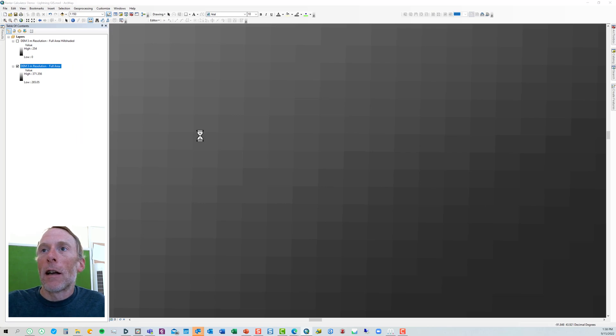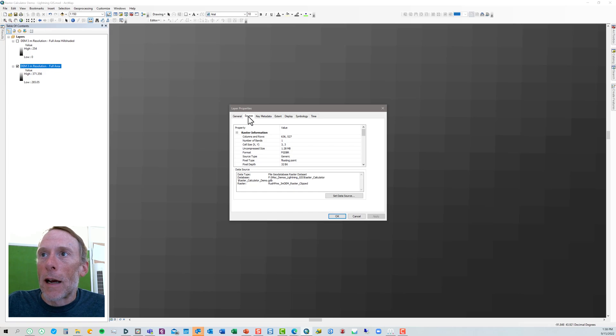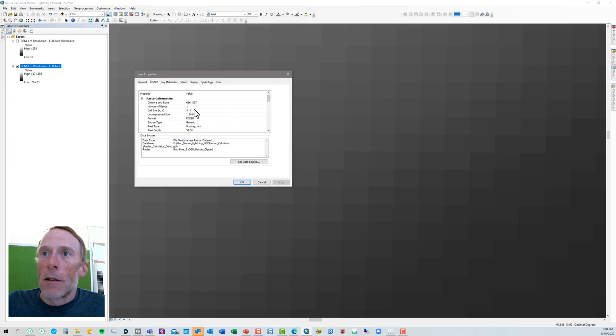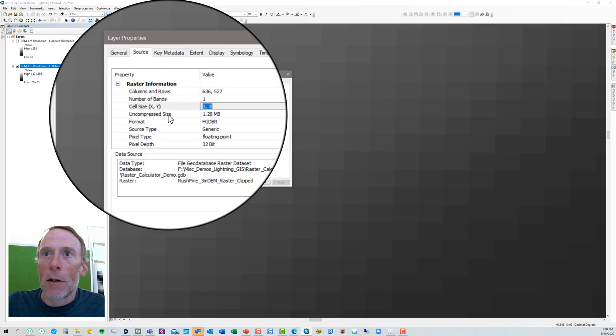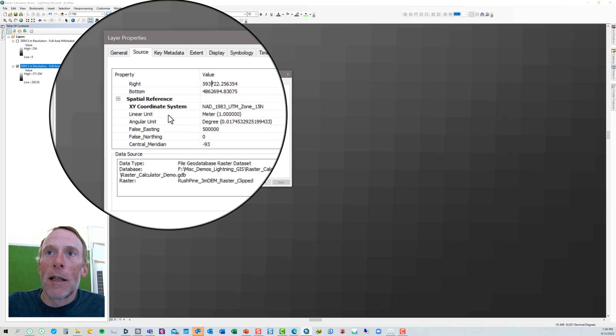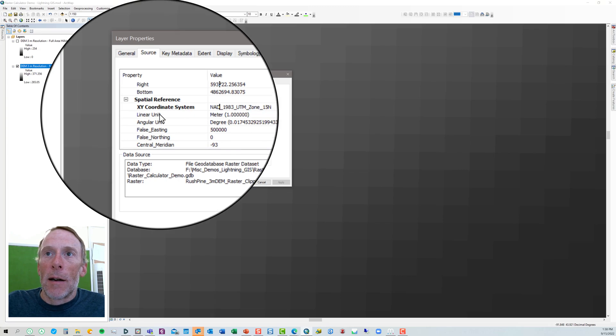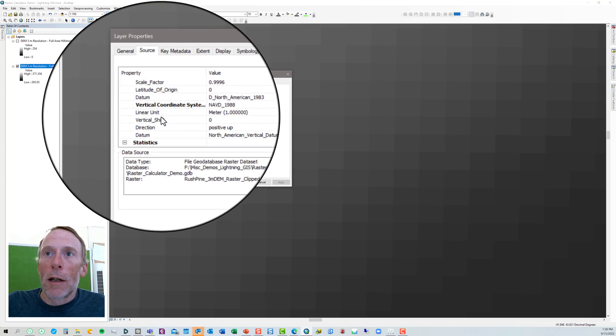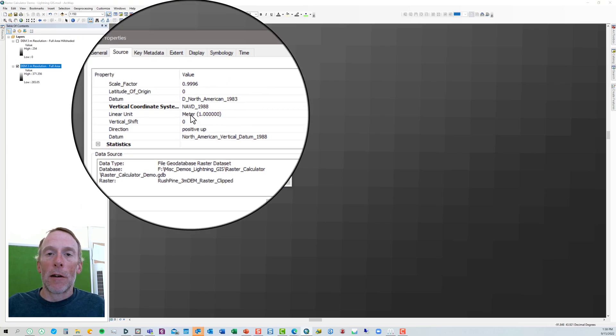We can also right click and look at the layer properties in the source tab and that tells us that the cell size is three meters by three meters. But if we scroll down here we can also see in the vertical coordinate system that our linear unit is meters. That means our raster values are in meters.